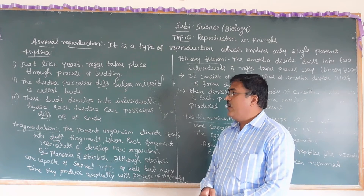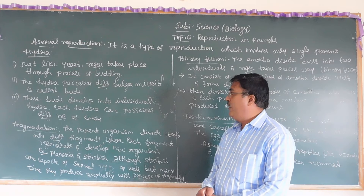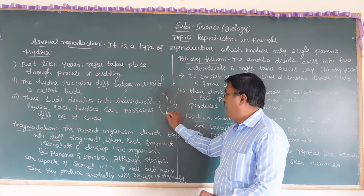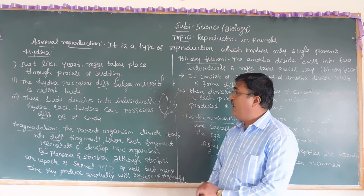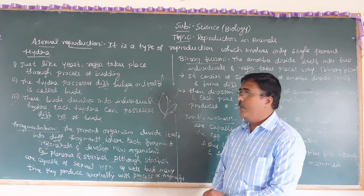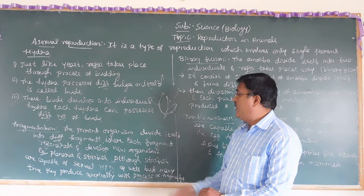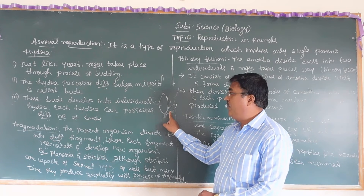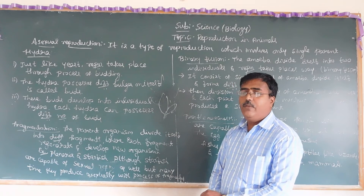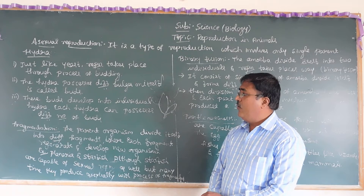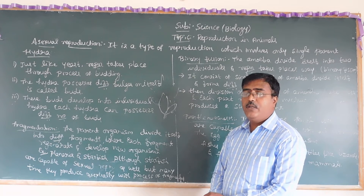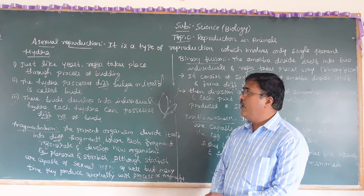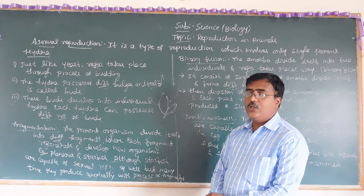Hydra produces different buds on itself. Each bud develops into an individual Hydra. Each Hydra can be associated with a different number of buds — one bud can form another bud from its base. These buds develop into new individual Hydra, which is how Hydra reproduces asexually through budding.